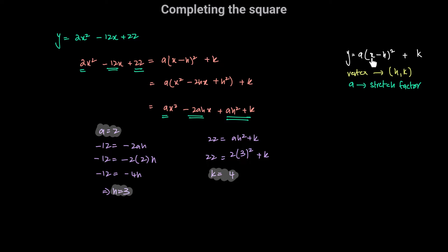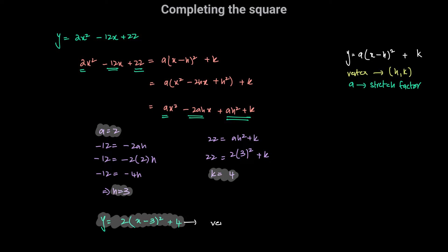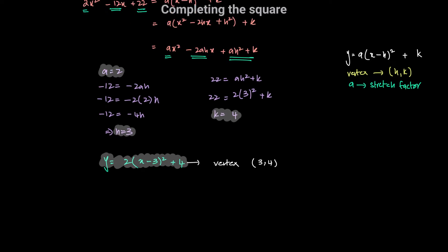Now that we have the values of a, h, and k, we can rewrite this expression in the completed square form: y is equal to 2 times (x minus 3) squared plus 4. We've written this quadratic in completed square form, and the coordinates of the vertex of this parabola are h comma k, which gives us the vertex at 3 comma 4.